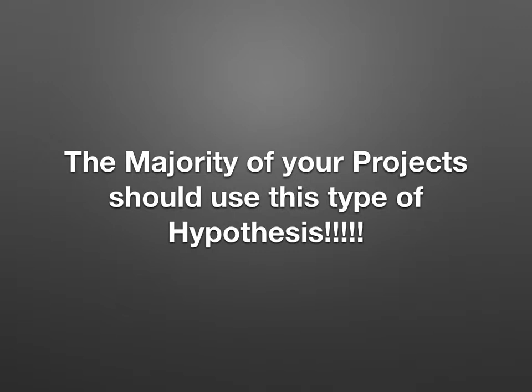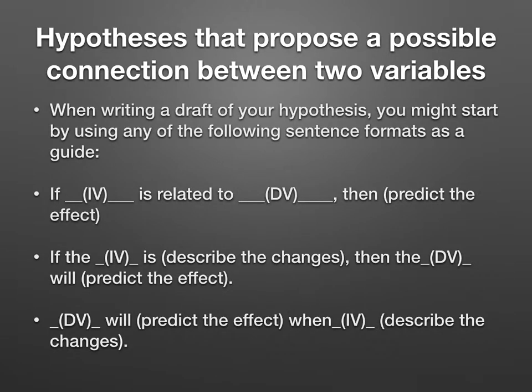You should know that both types of hypotheses overlap and are related to each other. Now let's talk about the next type: a hypothesis that proposes a possible connection between two variables. When writing a draft of your hypothesis, you might start by using sentence formats as a guide. For example: 'If drug one is related to planaria regeneration, then drug one will cause planaria regeneration to happen faster.'